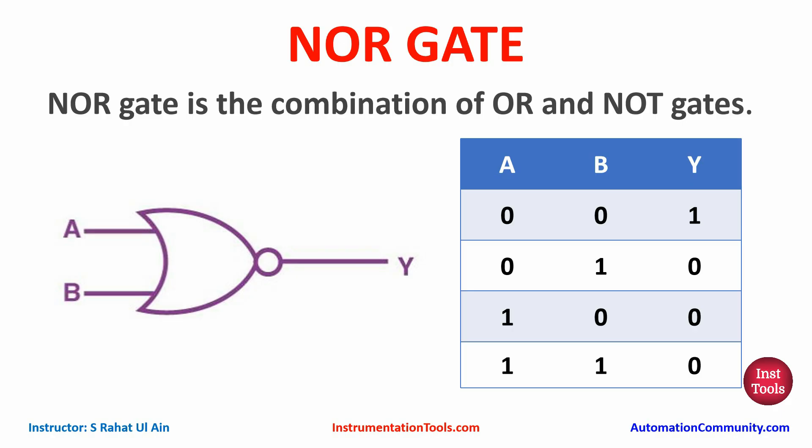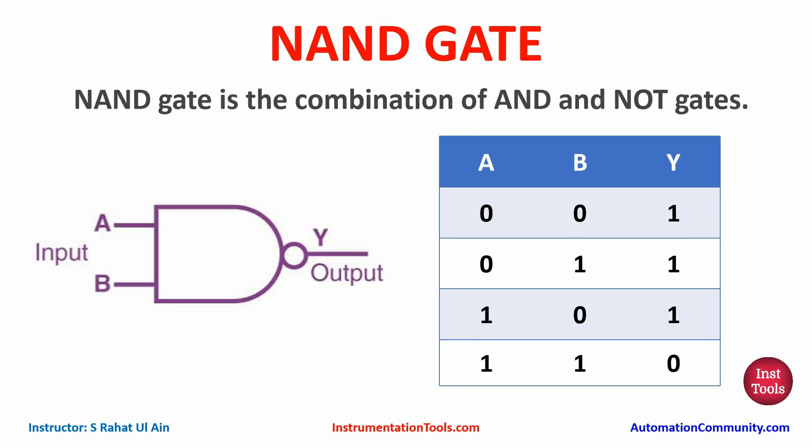If any one of the inputs is true, or all the inputs are true, then output Y will be off. NAND gate is the combination of AND and NOT gates. As you can see in the table, when both inputs are false the output Y is true. When any one input is true, the output Y is also on. When both inputs are true, the output Y will be off.